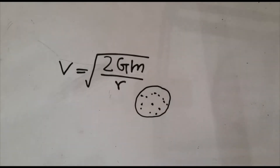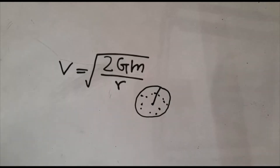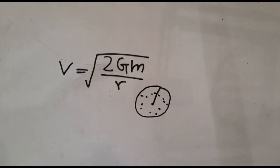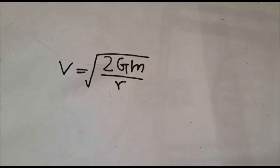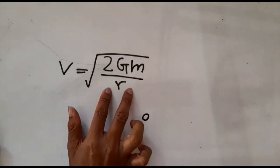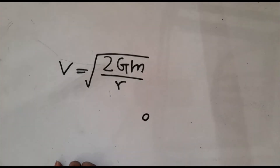If no light can make it back to the outside world from this region, that object will appear to be black — that's the reason why black holes are black. The Schwarzschild radius is the radius of this sphere. We can transform any object into a black hole by reducing its volume until the escape velocity of that object becomes equal to the speed of light.